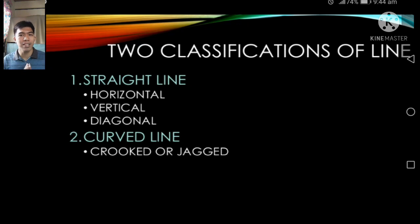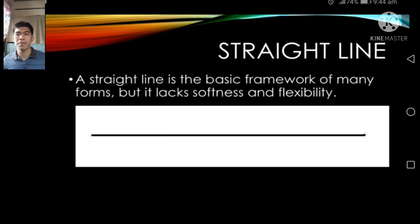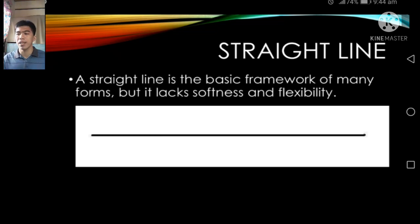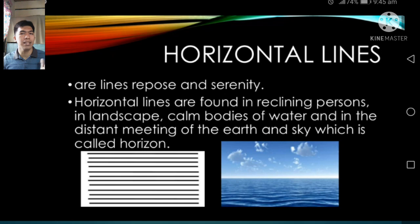There are two classifications of line: the straight line and the curve line. Under the straight line, we have horizontal, vertical, and diagonal. A straight line is the basic framework of many forms, but it lacks softness and flexibility — it cannot be bent or curved.